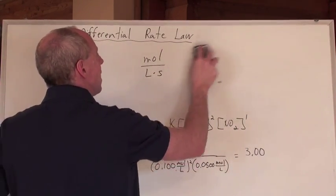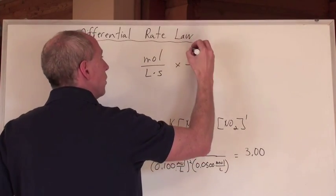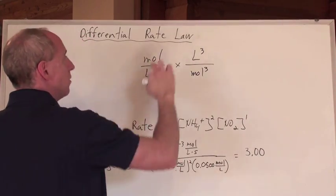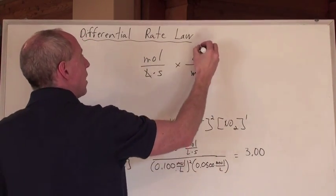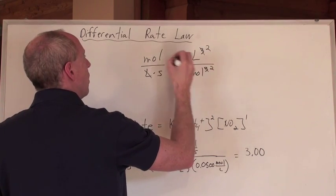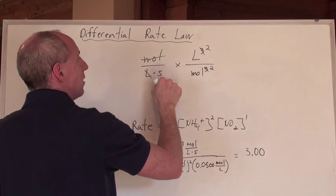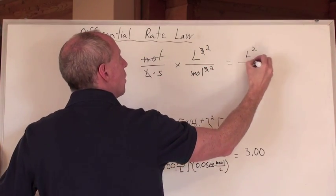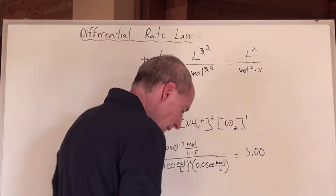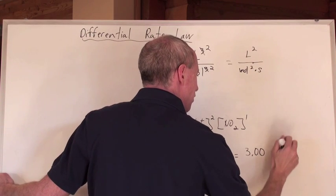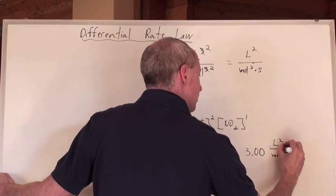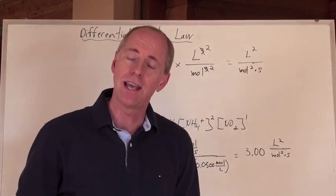That's the same as saying times the reciprocal of that, which was liters cubed per mole cubed. You with me? It's a reciprocal. So now, take a look. That liters cancels that to a squared. That moles goes squared here, gets rid of that. That second stays, and the unit is going to be liters squared per moles squared seconds. So that is the unit. This is liters squared per moles squared seconds. That's the unit for the rate constant, k.